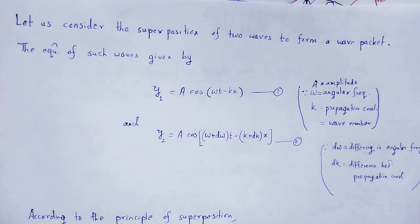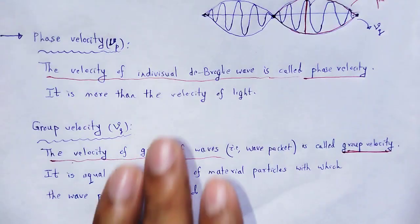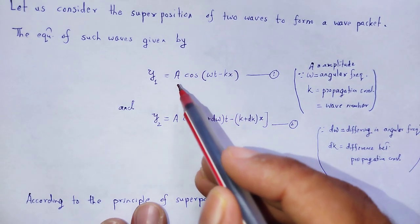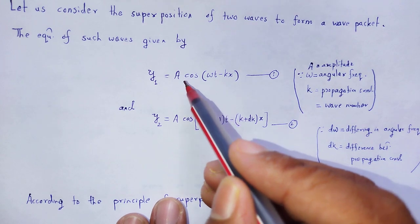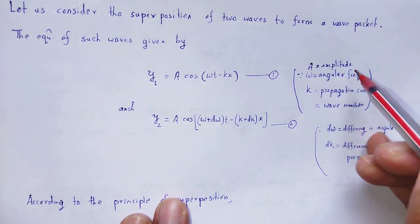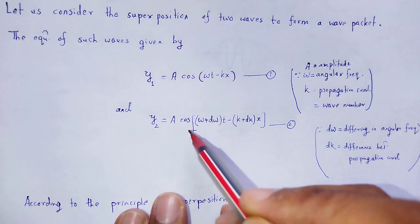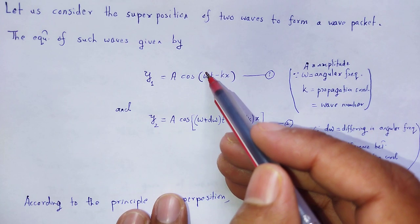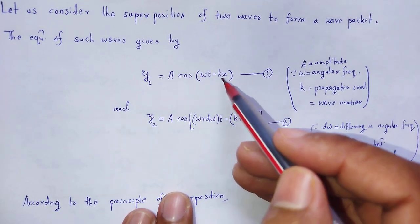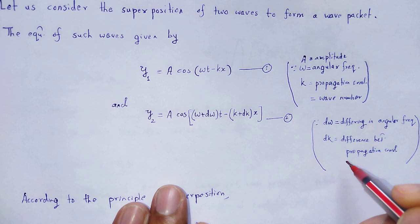Let me consider two waves that superimpose with each other to form a wave packet. One such wave: y₁ = a cos(ωt − kx), where a is amplitude, ω is angular frequency, and k is the propagation constant (wave number). Another wave: y₂ = a cos((ω + dω)t − (k + dk)x), where dω is the difference in angular frequency and dk is the difference in propagation constant.